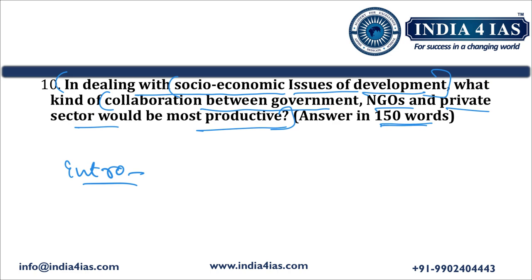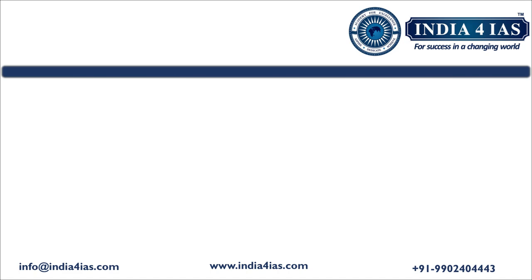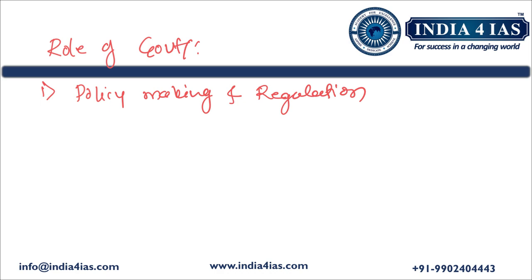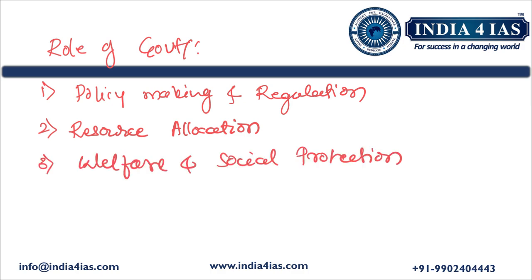After the introduction, we address the role of each sector. The government's roles include: first, policy making and regulation — the government plays a central role in formulating policies, laws and regulations aimed at addressing socio-economic challenges, and creates an enabling environment through infrastructure, public services and welfare programs. Second, resource allocation — the government manages public finances and allocates funds for developmental projects and large-scale infrastructure. Third, welfare and social protection — providing direct assistance through schemes such as subsidies, pensions, healthcare programs, and employment schemes like NREGA to combat poverty and inequality.